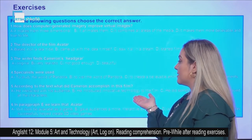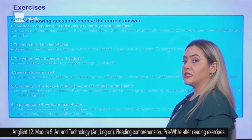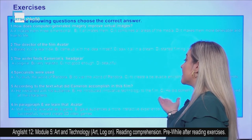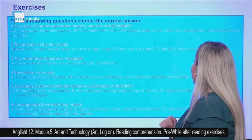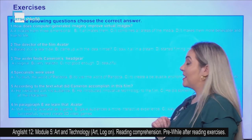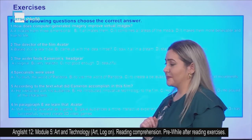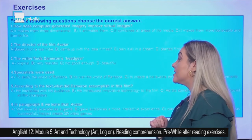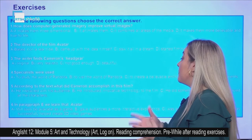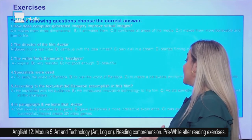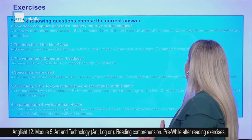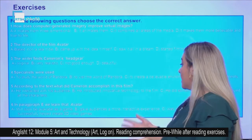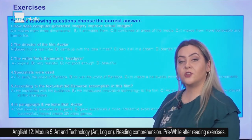According to the text, what did Cameron accomplish in this film? A) He interacted with his audience. B) He introduced innovative technology to the film. C) He did something impossible. D) He played all the characters. In paragraph E, we learned that Avatar: A) will soon be available as a game, B) gave audiences a more interactive experience, C) was as authentic as a video game, or D) has successfully helped create 3D video games.